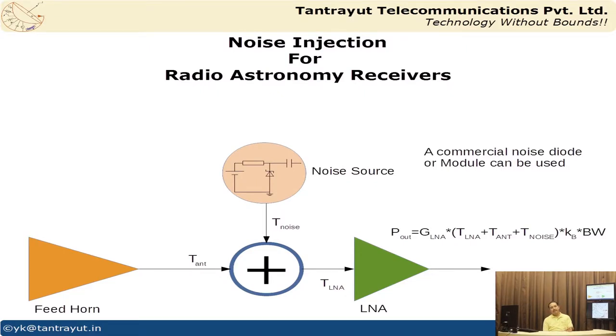For practical implementation, you typically use a noise diode or noise module — many commercial vendors supply these — so you simply provide DC power and it generates white noise for a given excess noise ratio. That is the noise source: a noise diode biased in the proper fashion, producing white noise at its output, which you add to your antenna noise before the LNA.